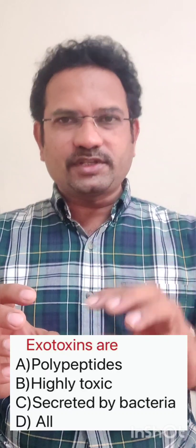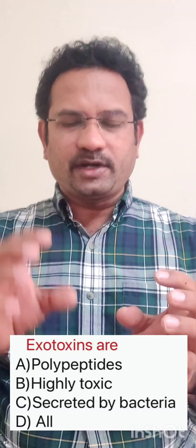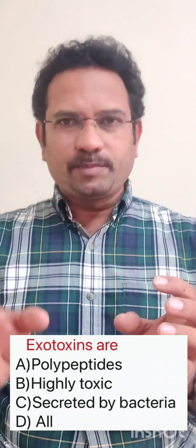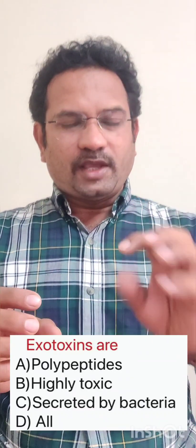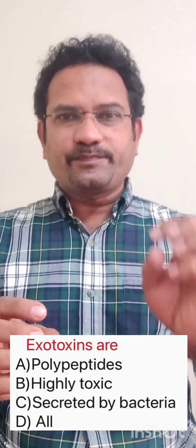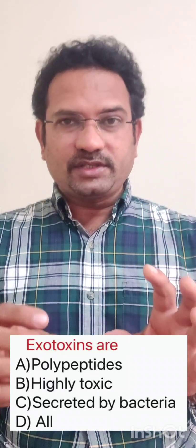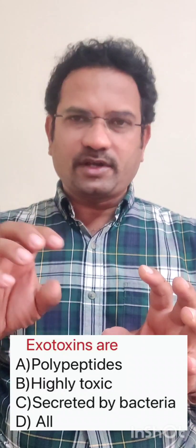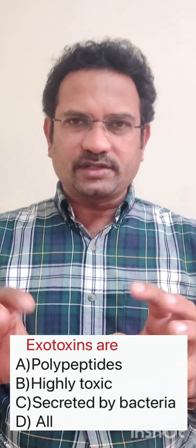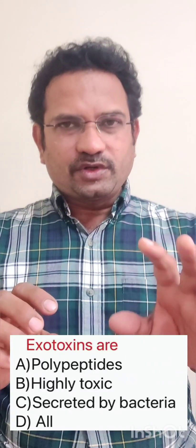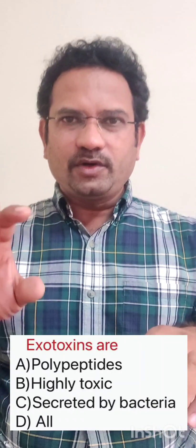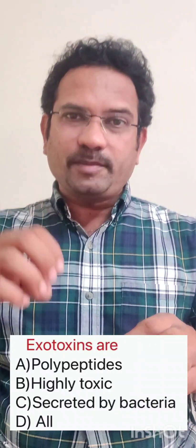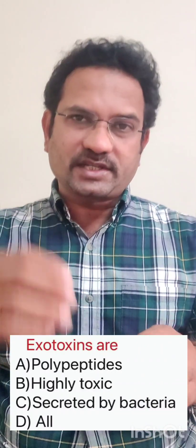Chemically, exotoxin is a polypeptide; endotoxin is a lipopolysaccharide. Exotoxins are highly toxic; endotoxins are not highly toxic. Exotoxins are secreted by living bacteria; endotoxins are released by bacteria after its death.